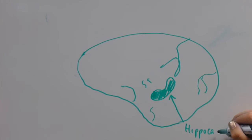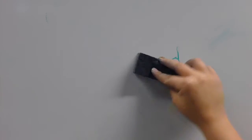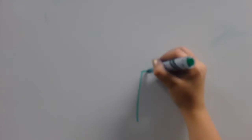Anterograde amnesia can present itself after causing damage to three distinct brain areas. The first is the hippocampus, the brain's memory center.